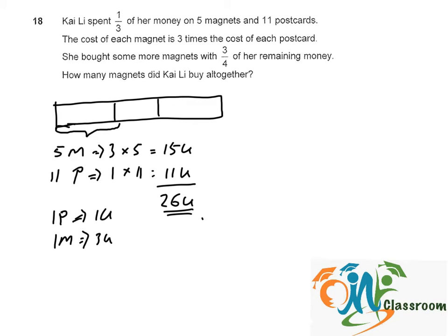So we can say that one-third of her money actually represents 26 units.